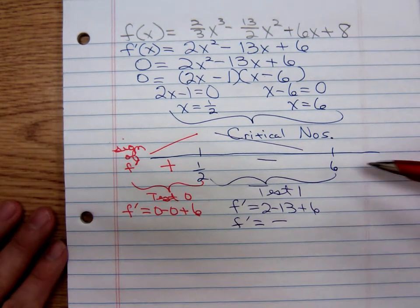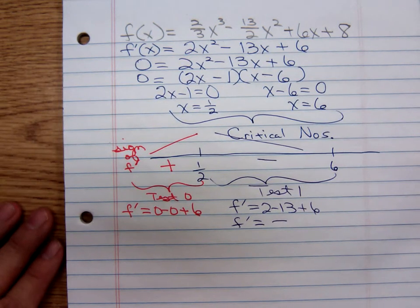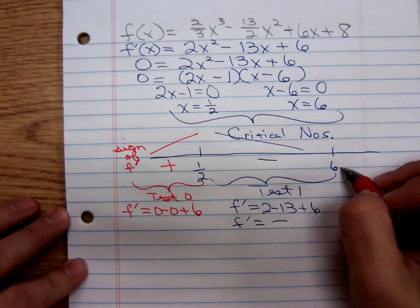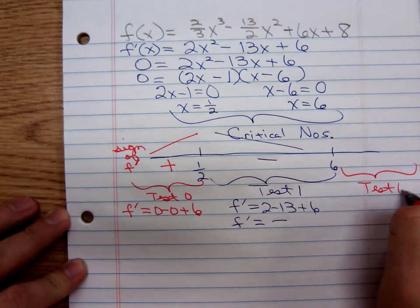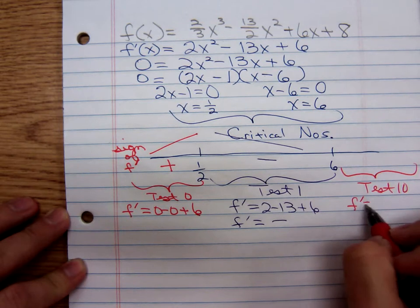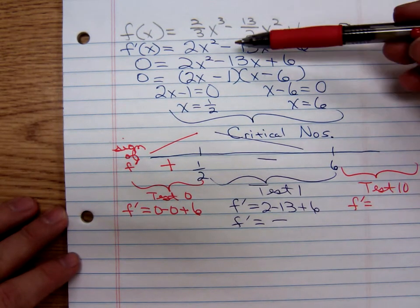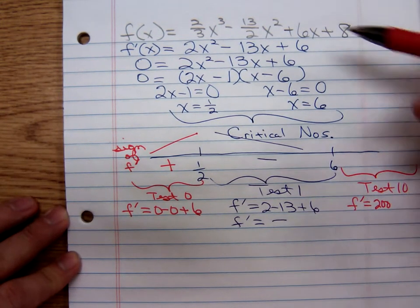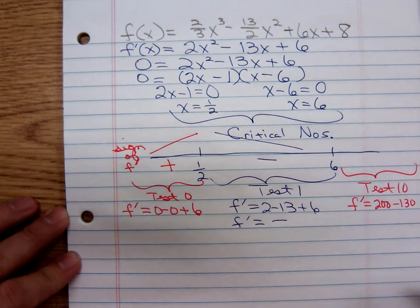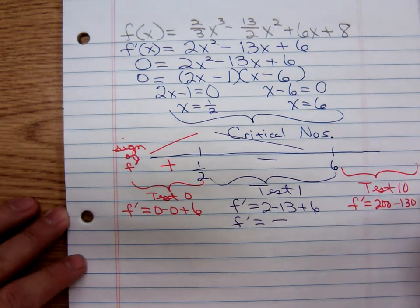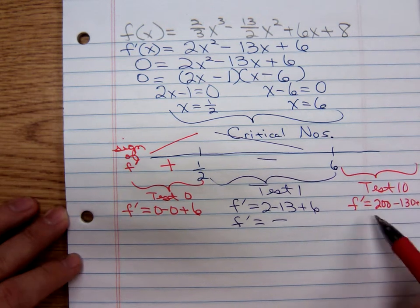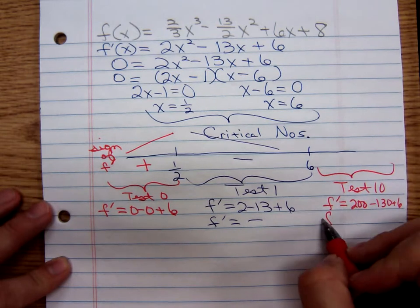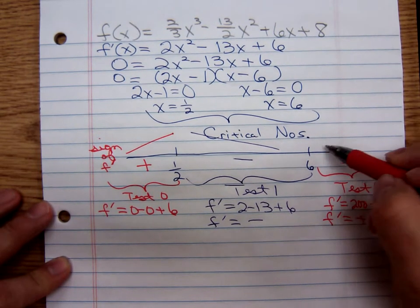And to the right of six, I'm not going to use seven. Seven squared is 49. I'm going to use 10. 10 is an easy number to square. Plugging it into the derivative: 10 squared is 100 times two, so we have 200 minus 130 plus six. That's going to be positive again. So, increasing.